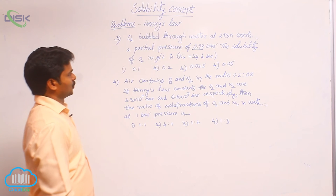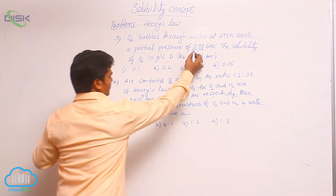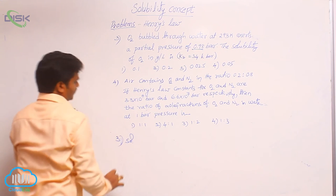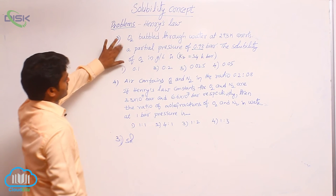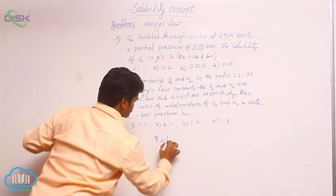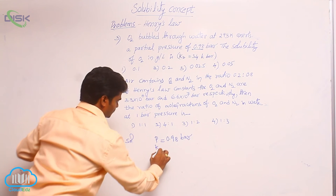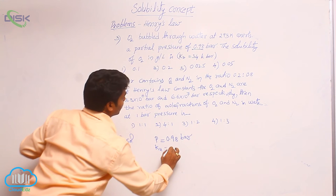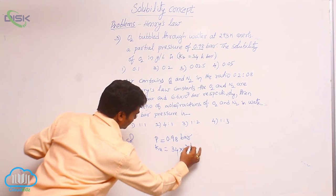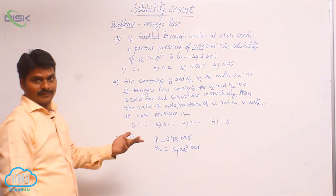Let us see the solution for the third problem. O2 bubbled through water at 293 K exerts a partial pressure of 0.98. The given points are: partial pressure, which means equilibrium pressure 0.98 bar, and Henry's law constant K_H is given as 34 kilo bar, that means 34 into 10 cube bar. We have to find out the mole fraction of solute.